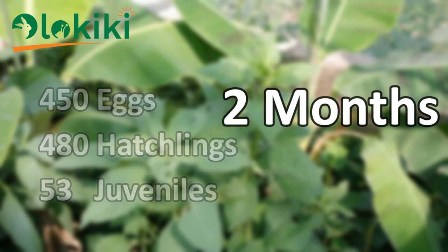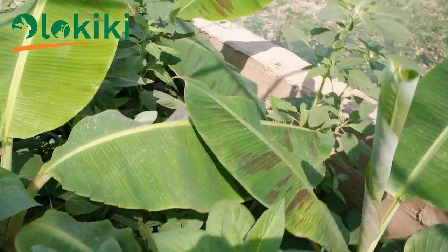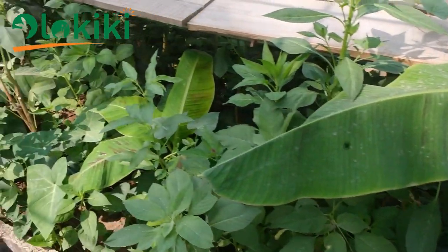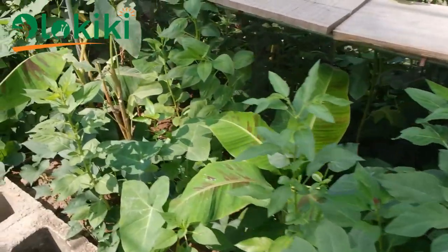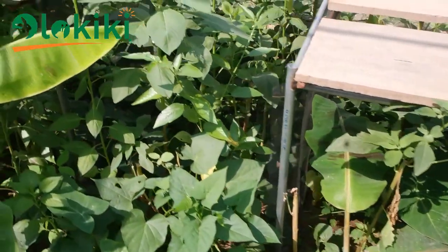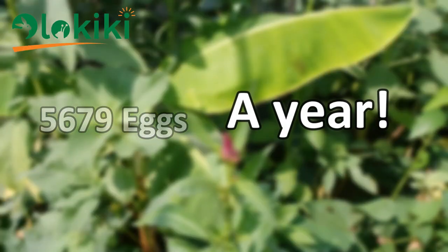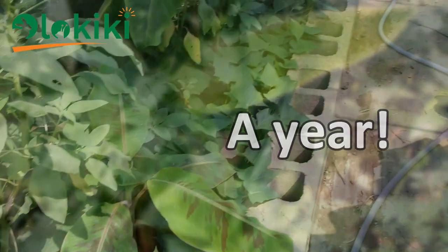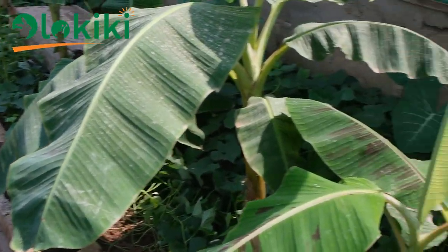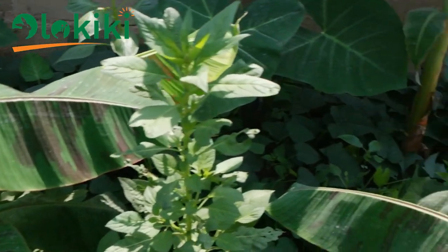Using this data also to predict what I should get after a year, the free range system must have produced 5,679 eggs in a year's time. But note: not all eggs that are laid will hatch, and not all that hatch will make it to maturity, because of the mortality rates in the free range system and the high mortality rates of the hatchlings.